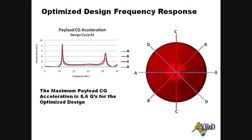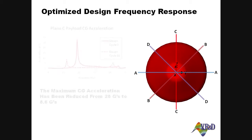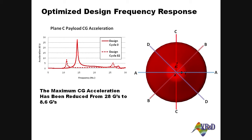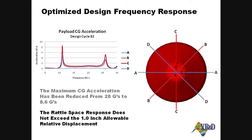The optimized design shows the payload CG acceleration to be 8.6 Gs. The final optimized design shows the payload CG acceleration has dropped to roughly one-third of the original design response. Additionally, the allowable rattle space requirement has not been exceeded for the new design.